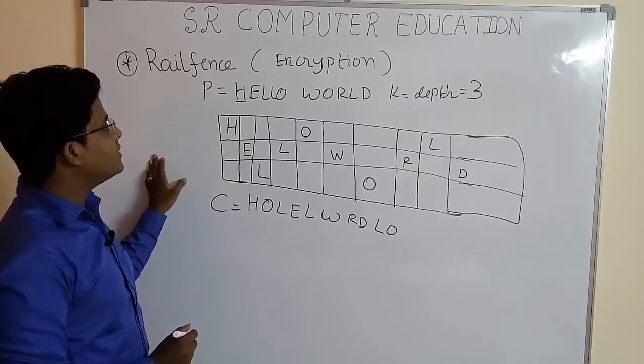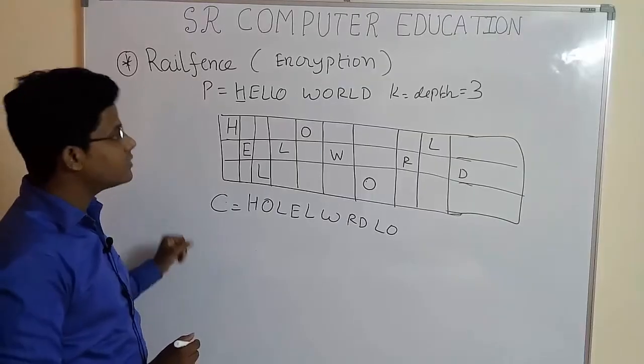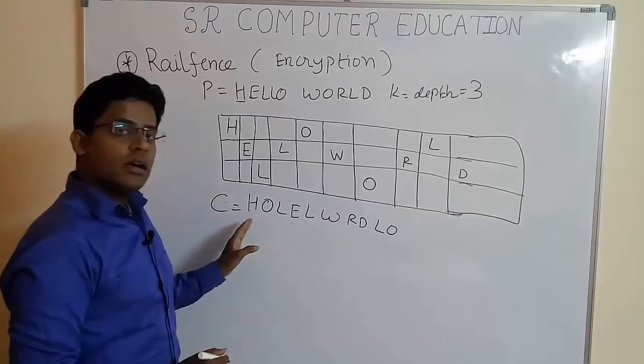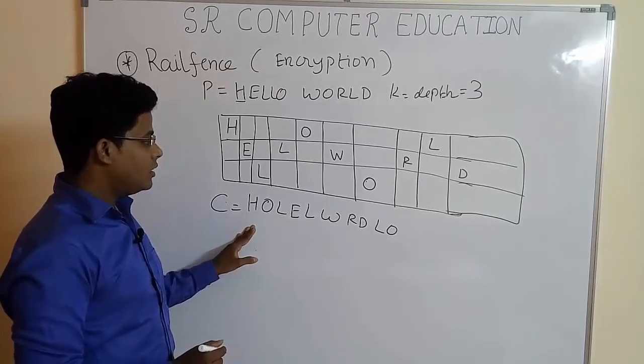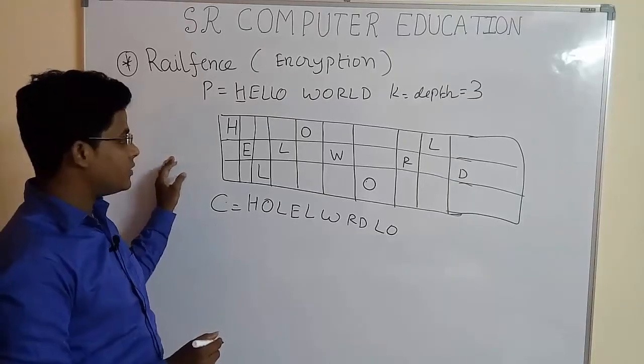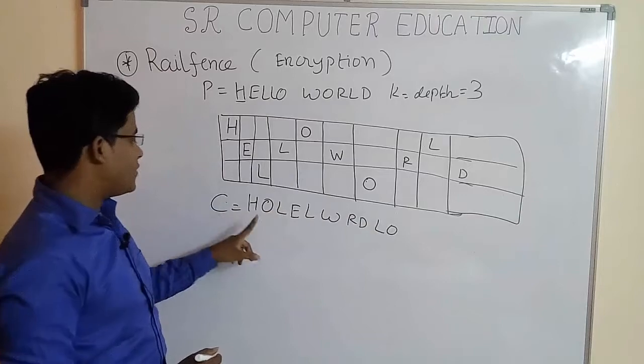Now let's see how to do the decryption when the given depth is 3. Here we got the ciphertext. Now in this video I am also going to show how to do the decryption. Find the number of alphabets in the ciphertext.